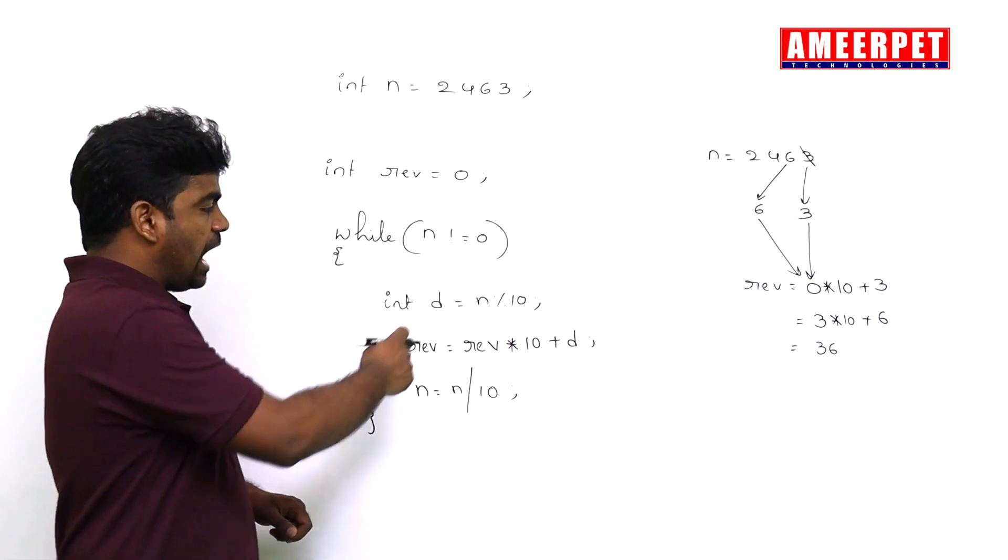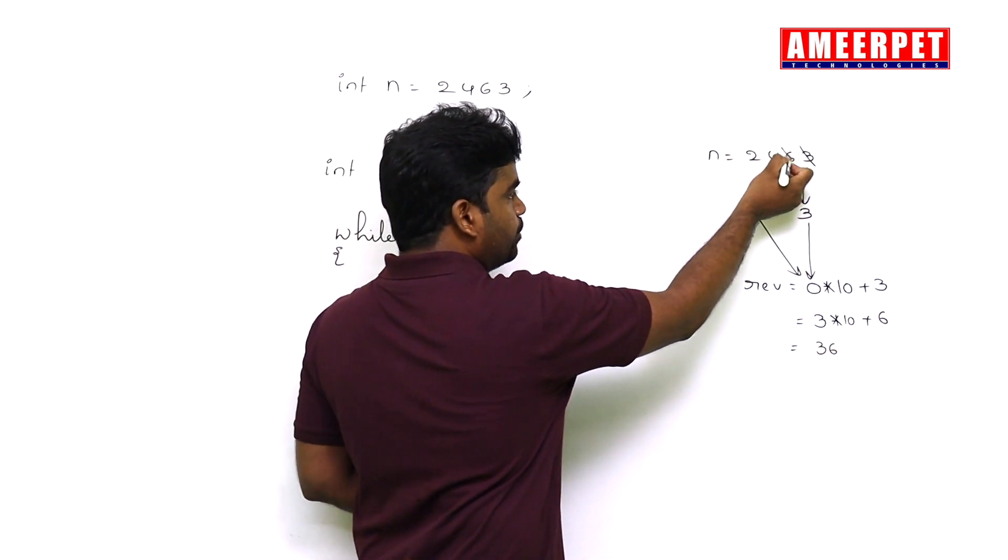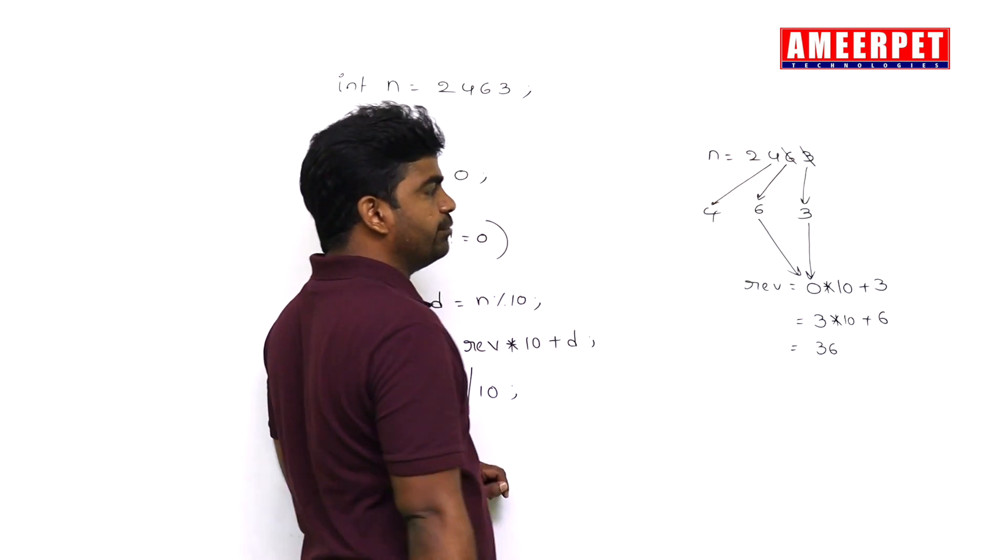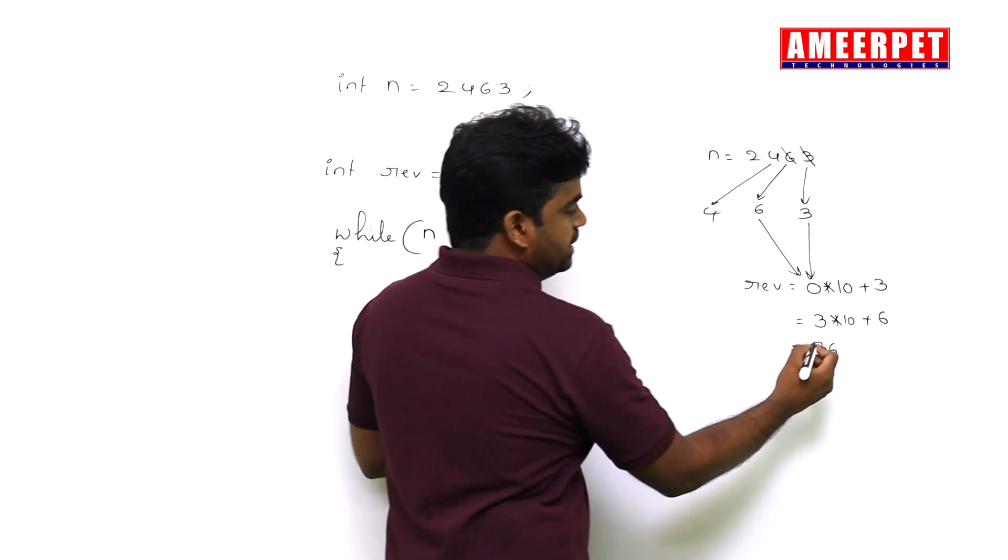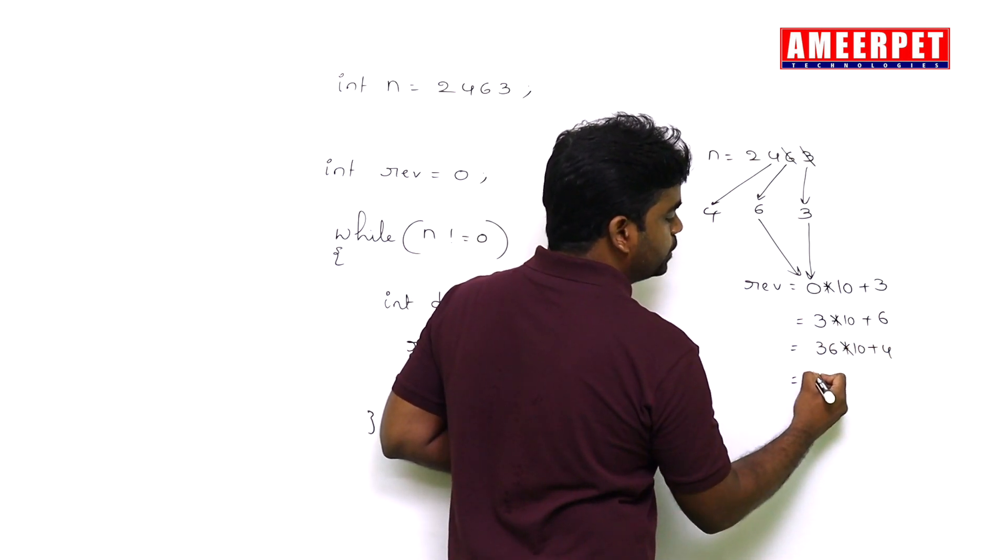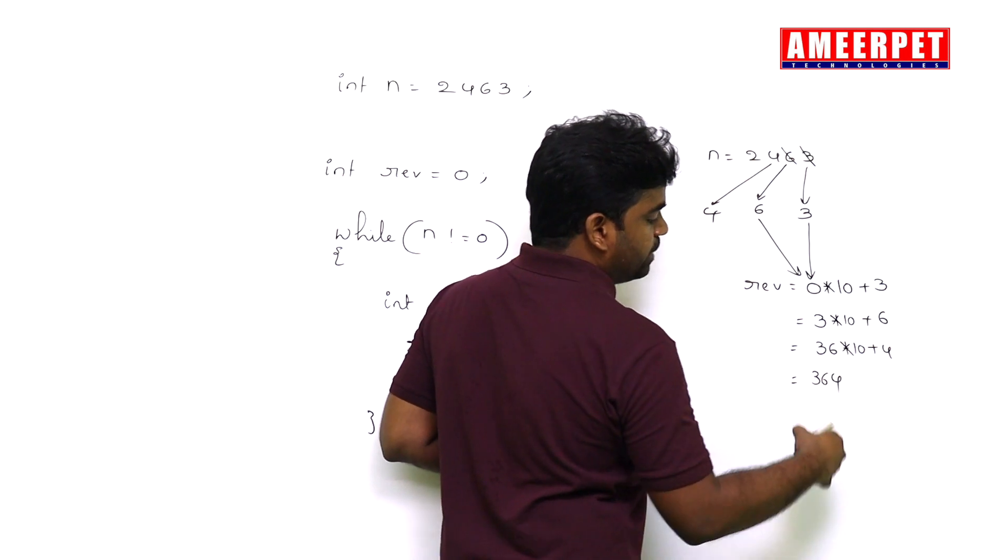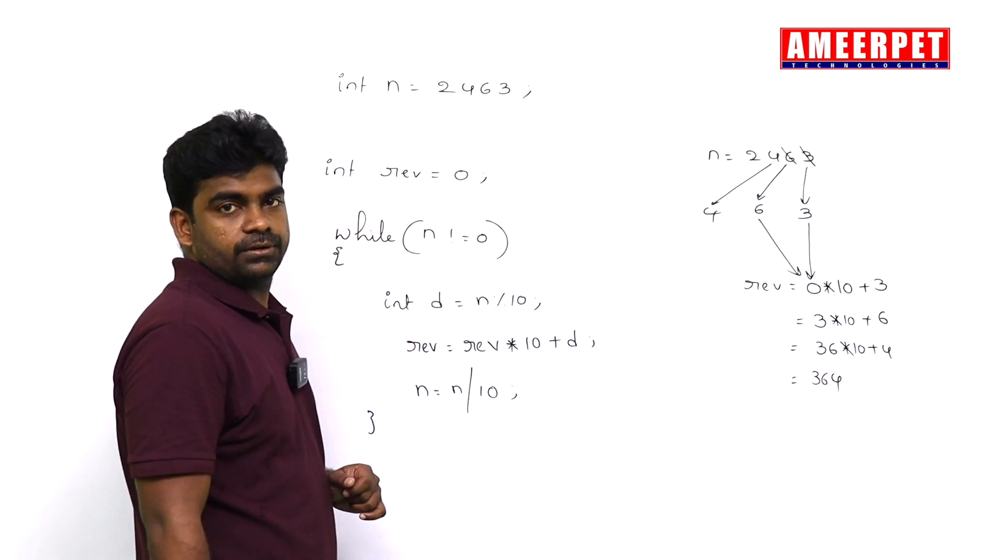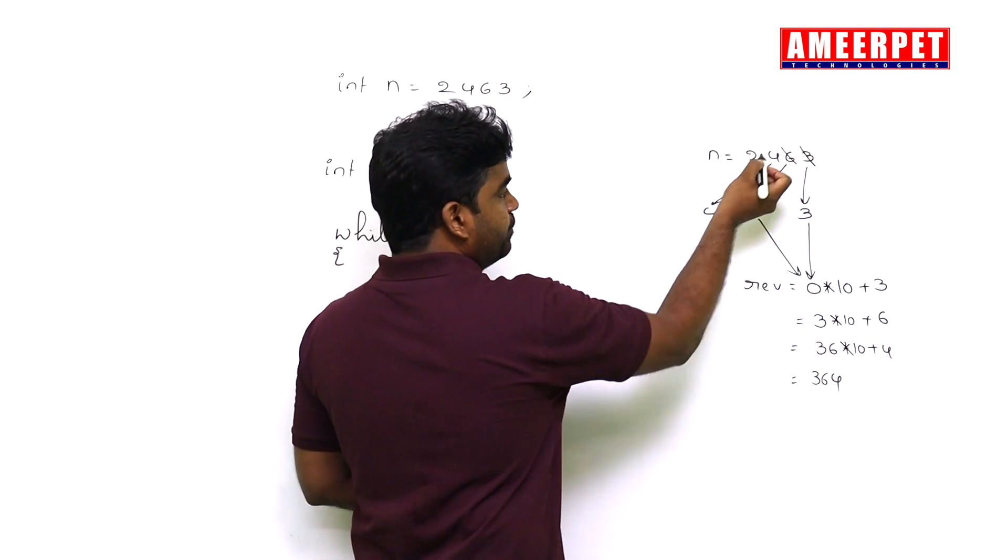After that again the digit will remove, the next digit will come. What is the next digit? 4. That is 36 into 10 plus 4, the value is 360 plus 4 is 364. Again the digit we are removing.